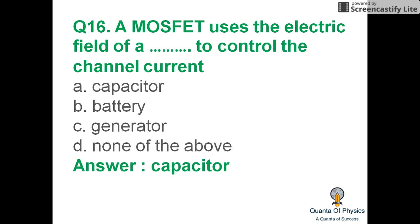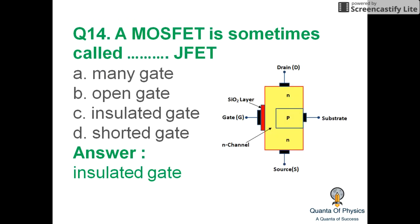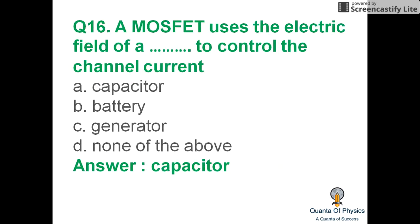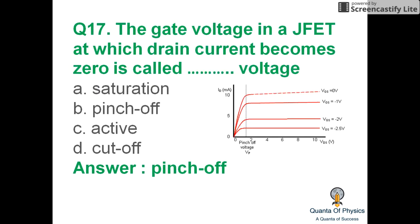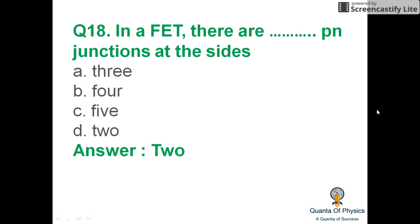A MOSFET uses the electric field of a capacitor to control the channel current. The gate and the channel are separated, and the layer between the gate and channel works as a capacitor. A gate voltage in a JFET at which the drain current becomes zero is called pinch-off voltage.